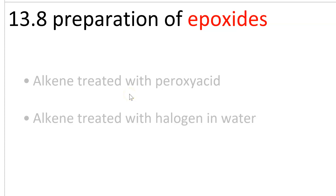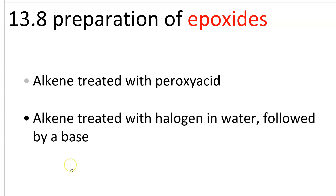Preparation of epoxides. We know two ways to prepare epoxides. In both cases, our substrate is an alkene, and we do an addition reaction. In the first method, we treat an alkene with a peroxy acid. In the second method,